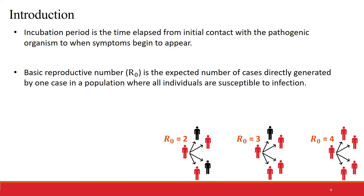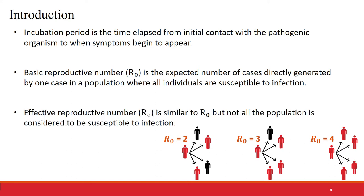The basic reproductive number or R0 is the expected number of cases generated by one case in a population where all the individuals are susceptible. The effective reproductive number or RE is similar to R0 but not all population is considered to be susceptible in this case. The R0 and RE are important because it is commonly accepted that if the R0 is bigger than 1 the disease will spread and the bigger they are the easier it spreads.